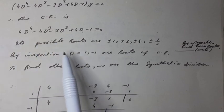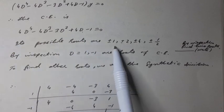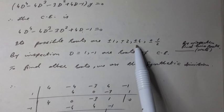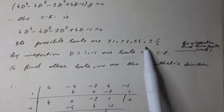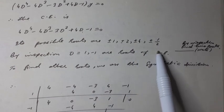Its possible roots are plus minus one, plus minus two, plus minus four, plus minus one over two. Note it.